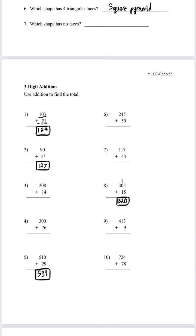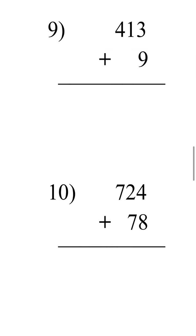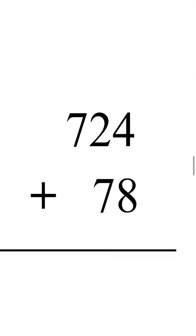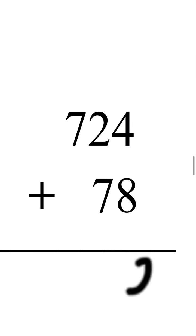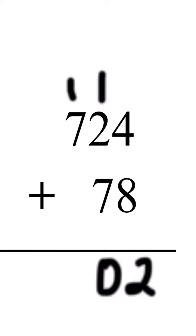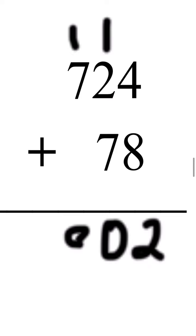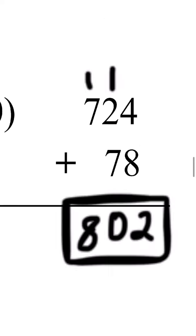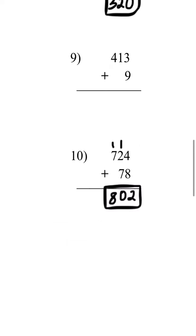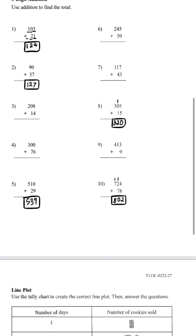Let's look at number ten: four plus eight is 12, one plus two is three, and three plus seven is 10. Carry one — one plus seven is eight, so 802 is the answer for number ten.